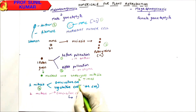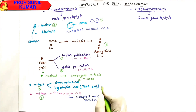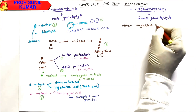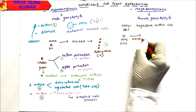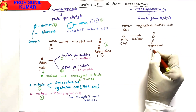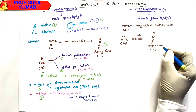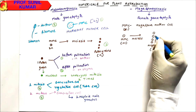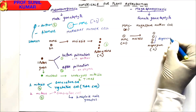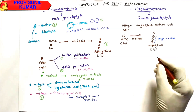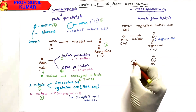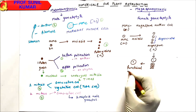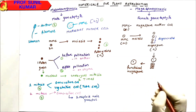Microsporogenesis produces four haploid pollen grains. In megasporogenesis, the MMC (mega spore mother cell) undergoes meiosis and produces four haploid mega spores. Out of these, the upper three or lower three will degenerate. When the three degenerate, they give all their energy to the remaining one, which becomes the functional mega spore.